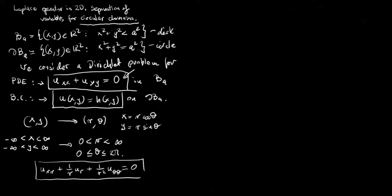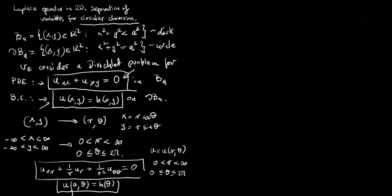After transforming the problem from Cartesian coordinates to polar coordinates, we are now looking for a function U of r and theta, for r between 0 and infinity and theta between 0 and 2π. The boundary conditions in polar coordinates say that the function U on the circle of radius a must be equal to a given function of theta. So now we have transformed our Dirichlet problem into polar coordinates, and our problem looks like this.